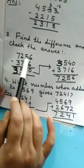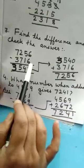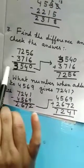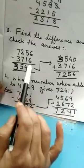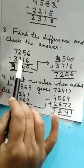7,256 minus 3,716. First of all, you subtract. 6 minus 6, 0. 5 minus 1, 4. 2 minus 7 will not go. So, we will take as 12.